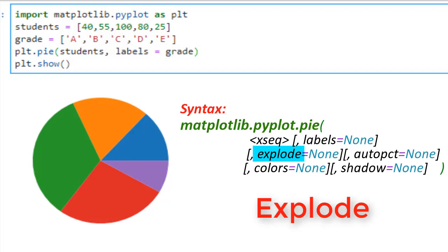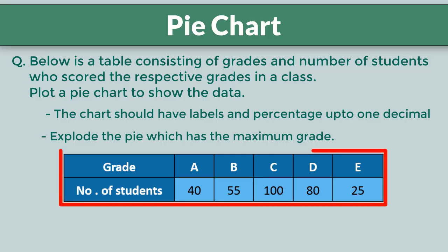Next we need to explode the one which has the maximum grade. If I see student data, C has the maximum grade. Also note that C is at the third position. The pie function takes in a sequence for explode too.